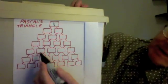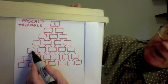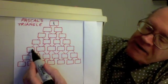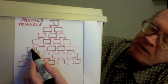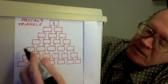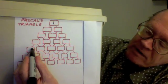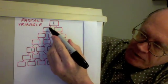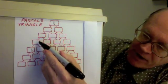For example, consider this box, this location. How many ways are there to get to it from the top? Well, there's exactly one way. That one way is to veer left every step of the way.